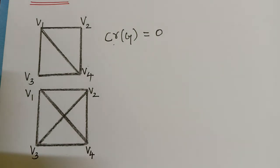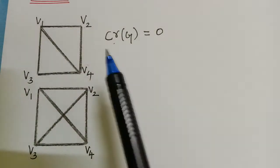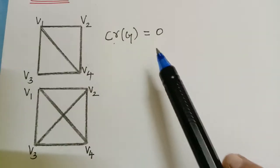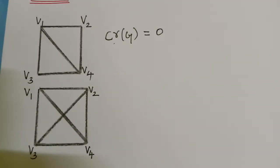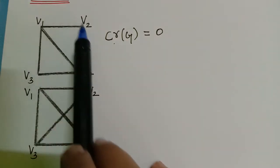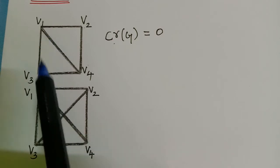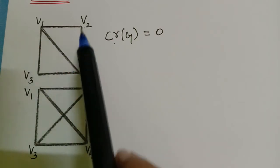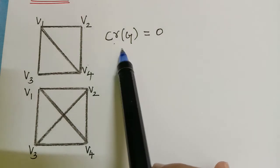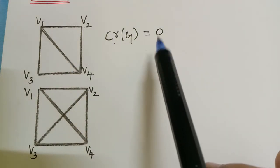Now let us learn about crossing number. The crossing number of a planar graph is always equal to 0 because the number of crossings in a planar graph is obviously 0. If we see here there are no crossings of the edges, so the crossing number of a planar graph is always equal to 0.